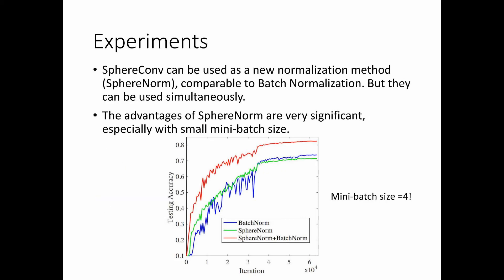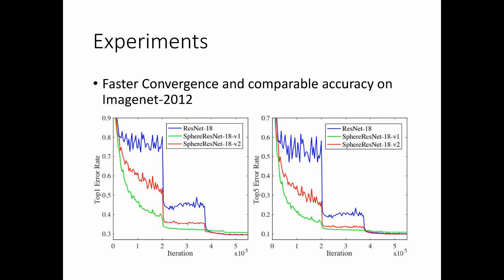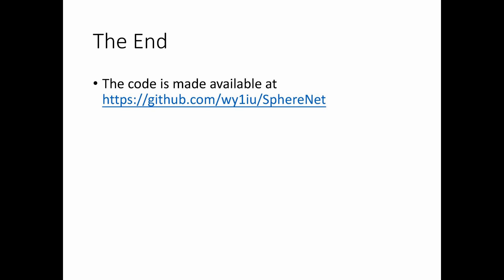SphereConv can also be used as a new normalization method comparable to batch normalization, but they can be used simultaneously. The convergence gain of SphereNorm is very significant, especially with small mini-batch size. SphereNet also achieves faster convergence and comparable accuracy on large-scale datasets like ImageNet. The code is also available on GitHub. Thank you.